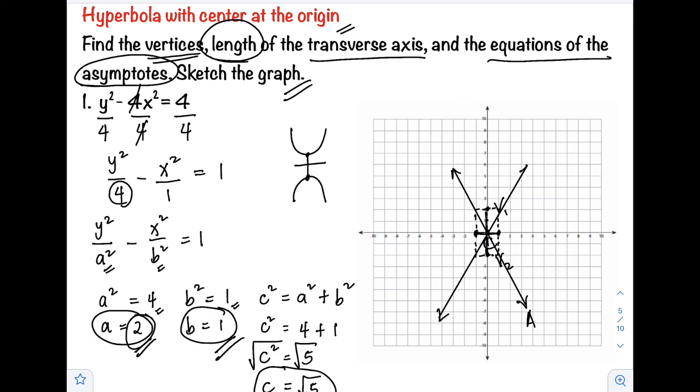Then using the asymptotes, from the vertices, curve your hyperbola. There you go.